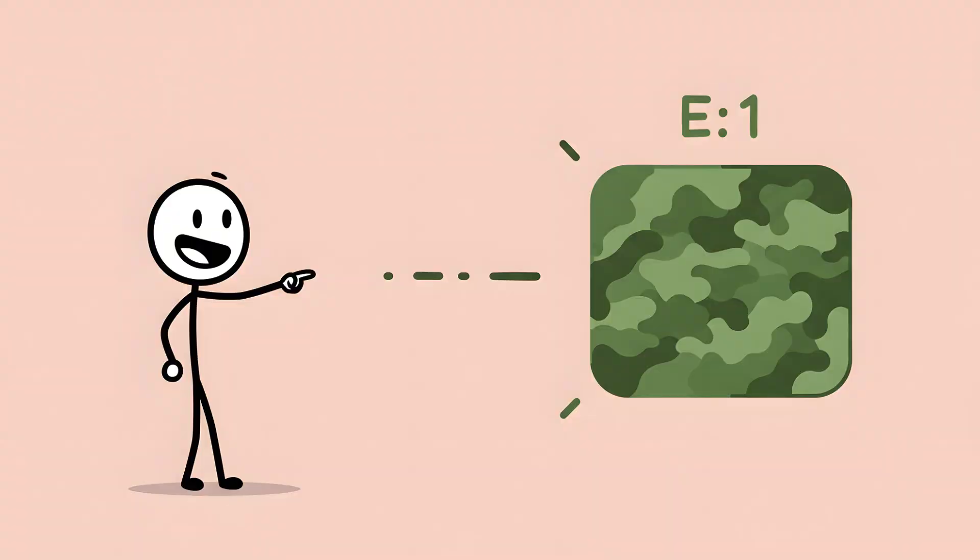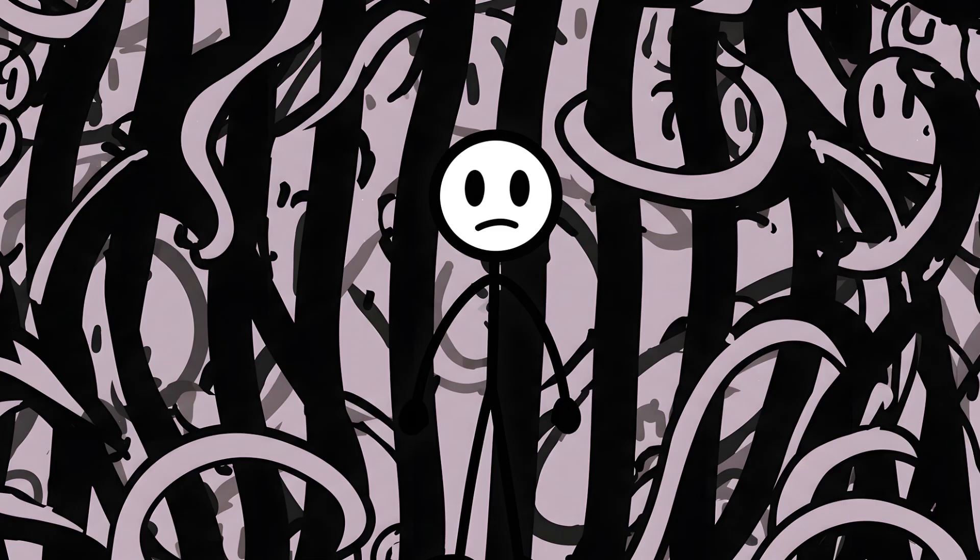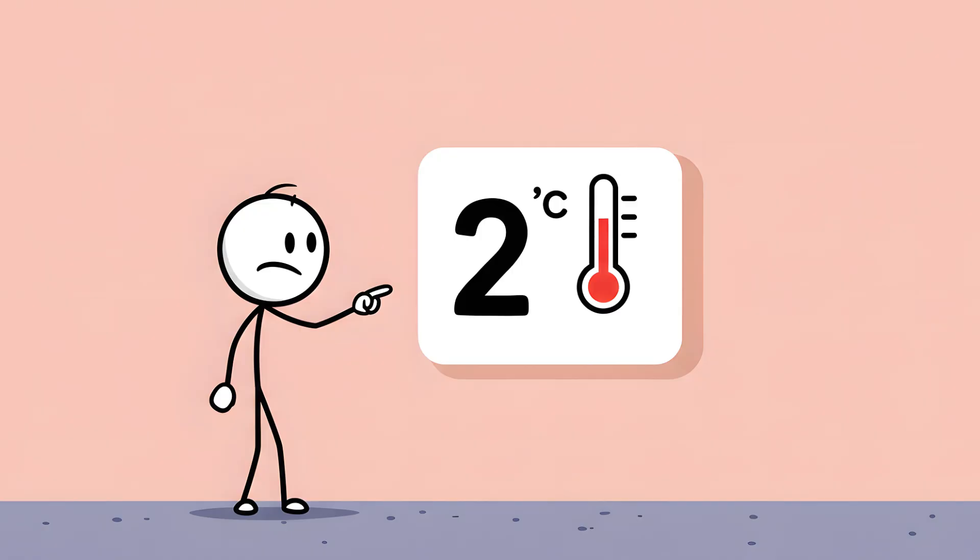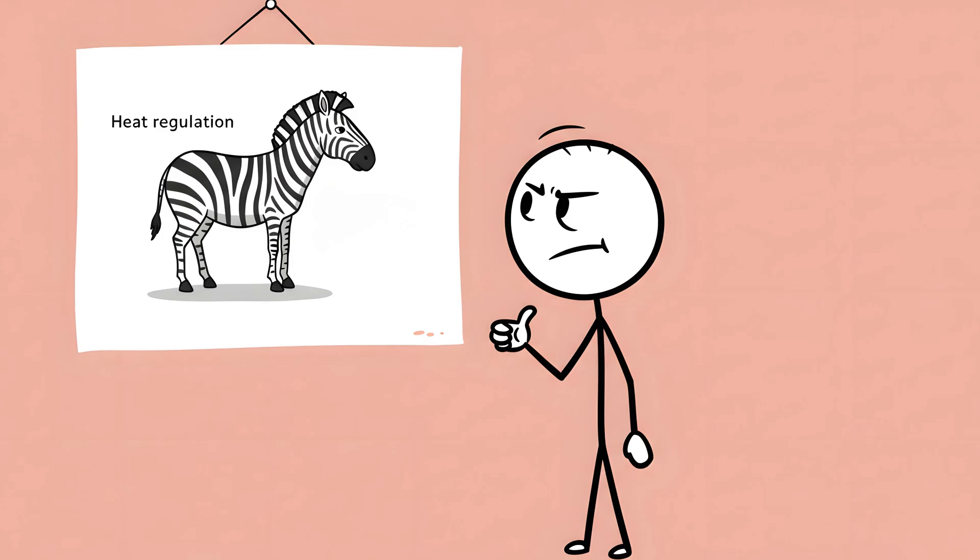Theory one, camouflage. This sounds insane, but the idea is that in a herd, the mass of moving stripes creates a confusing optical illusion for a predator. It's called motion dazzle. The lion can't easily pick out a single individual from the swirling, chaotic mess of lines. It's hard to tell where one zebra ends and another begins. Theory two, heat regulation. The idea here is that the black stripes get hotter than the white stripes, creating tiny convection currents of air over the zebra's body, a sort of built-in personal air conditioning system. A neat idea, but the evidence for it is pretty weak. Theory three, social signaling. Like a fingerprint, every zebra's stripe pattern is unique.